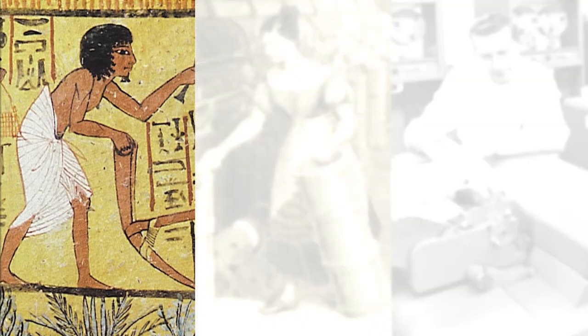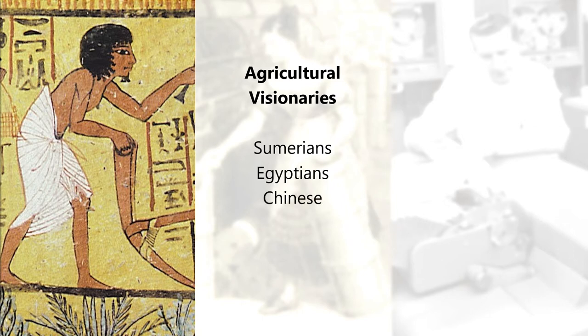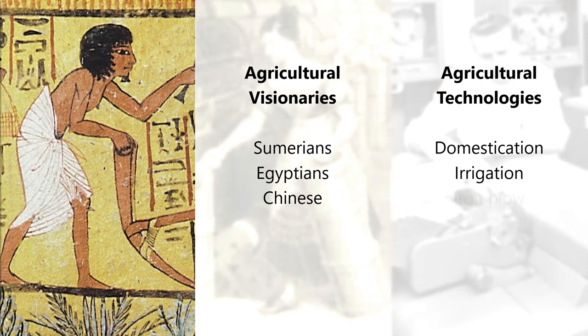During the agricultural revolution, we had visionary societies like the Sumerians, Egyptians, and Chinese. They all capitalized on the key technologies of the agricultural revolution. As a result, they became some of the largest and most powerful civilizations on earth.